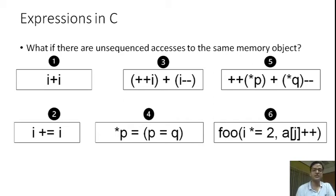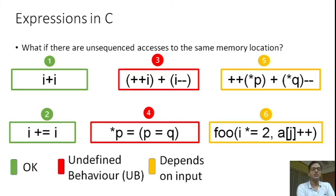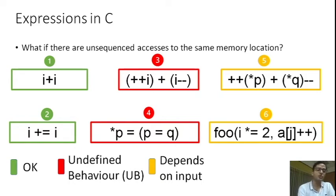To understand unsequenced races, consider the six examples on the slide. In the first example, i plus i, there are unsequenced accesses to the same object i, but both are read accesses and thus this is a legal expression in C. In the second expression, there are two accesses of which one is an update, but C semantics state that the RHS of an assignment is sequenced before the LHS update, and thus even such an expression is completely legal in C.